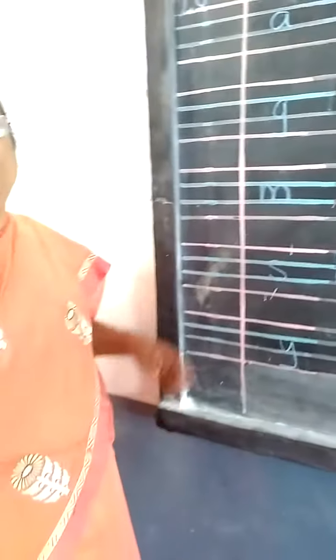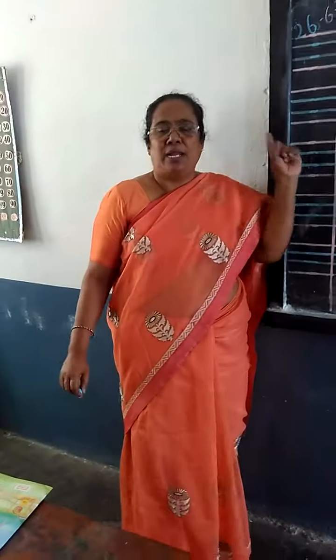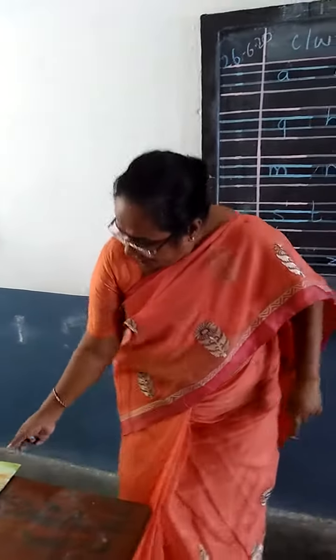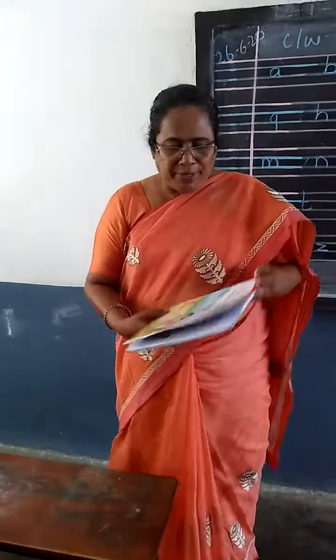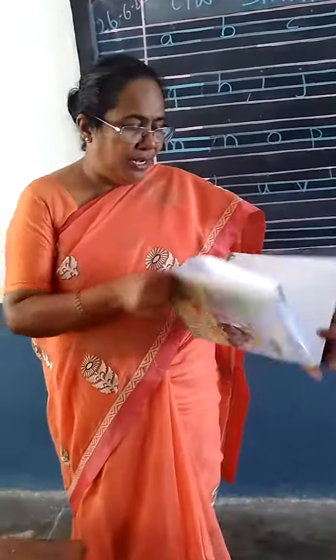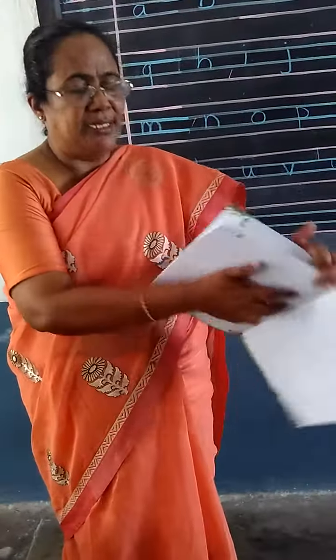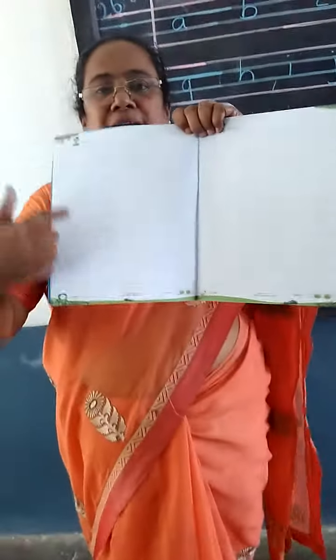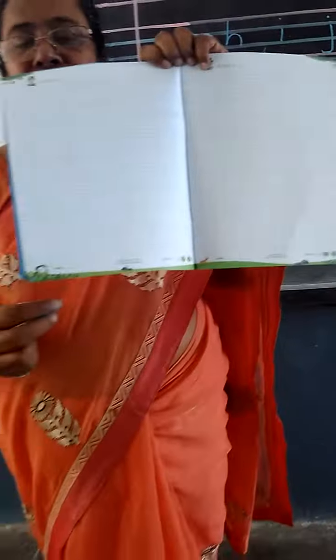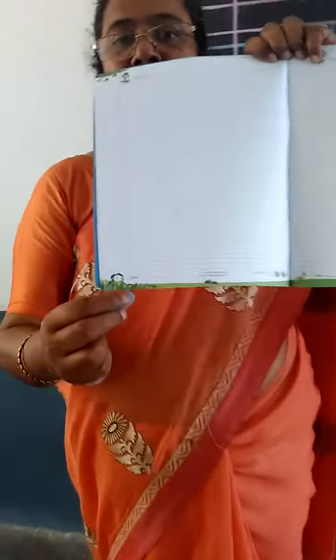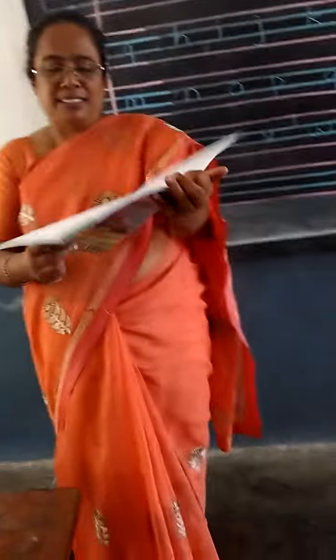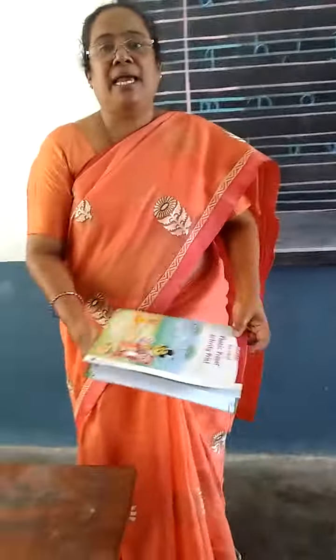This you will write in your class workbook one time, and in the prime activity book you will write small letters A to Z, page number 5 and 6. Let's see the page numbers. Page number 5 and 6. Touch the line and write.